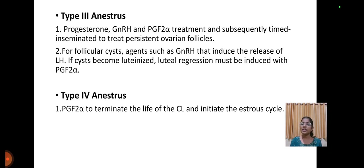For Type 3, progesterone, gonadotropin-releasing hormone, and PGF2-alpha treatment with subsequent timed insemination is used to treat persistent ovarian follicles. For follicular cysts, agents such as GnRH that induce the release of LH are used. If cysts become luteinized, luteal regression must be induced with PGF2-alpha. For Type 4 estrus, PGF2-alpha is used to terminate the life of the CL and initiate the estrus cycle.